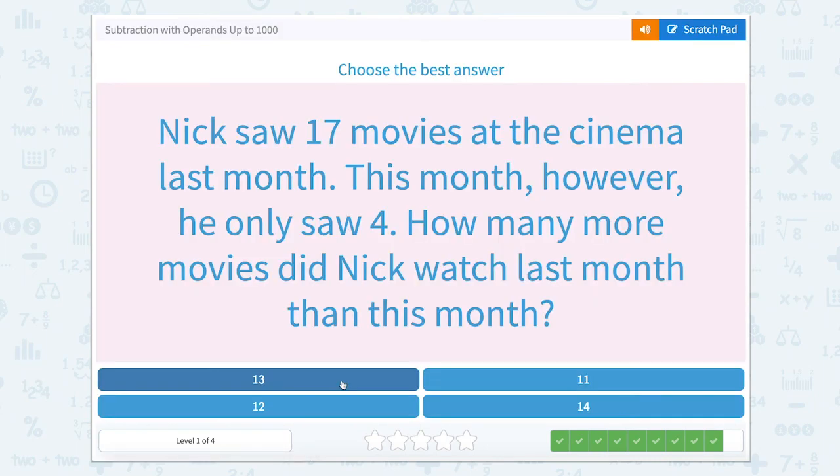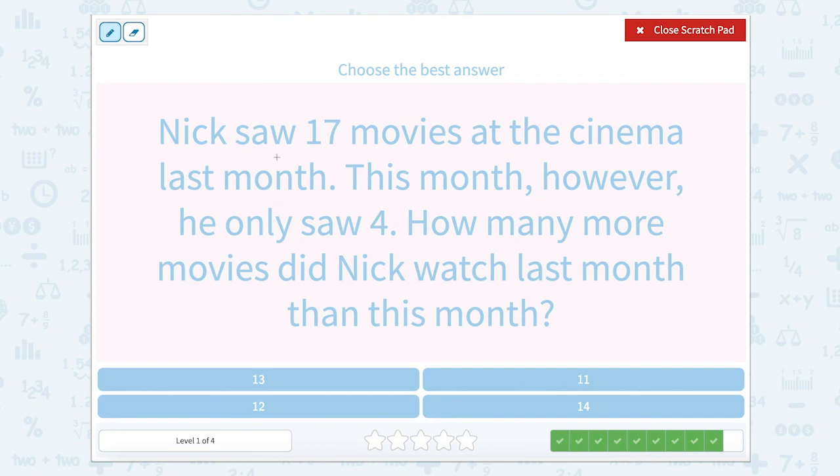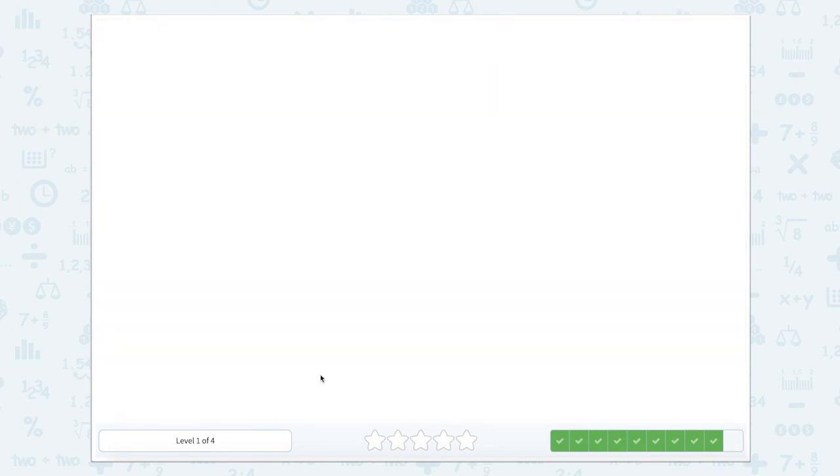Nick saw 17 movies at the cinema last month. This month, however, he only saw four. How many more movies did Nick watch last month than this month? So let's look at how many movies Nick saw at the cinema last month. Nick saw 17 movies. He only saw four this month. So let's subtract to find the difference. 17 minus four from this month equals 13. So Nick watched 13 more movies last month than this month.